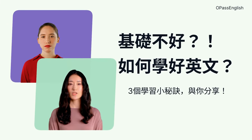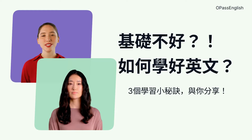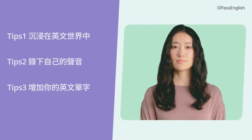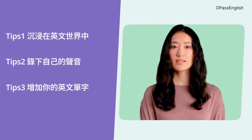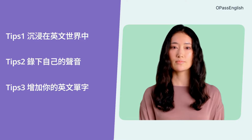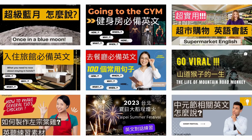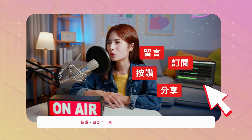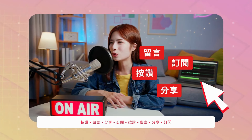同学问我们,英文基础不好,该怎么学好英文? Let's share three tips today, so you can start to learn good English. 今天跟大家分享三个学习英文的小秘诀：一,沉浸在英文世界中；二,用手机录下自己的声音；三,增加你的英文单字。欢迎来到All Pass English,每天为您带来丰富实用又有趣的英文内容。别忘了订阅我们的频道并开启小铃铛,随时掌握最新精彩影片哦!